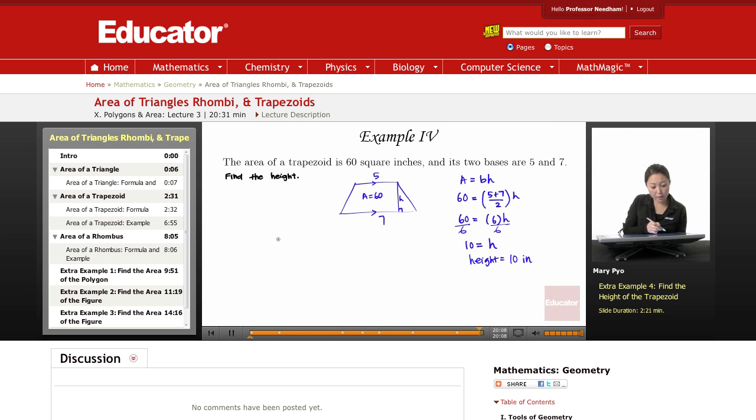So if you're given the area and you have to look for a missing side, base, height, whatever it is, just plug everything into the formula and solve for the unknown variable. Solve for what you're looking for. Make sure, don't forget your units.